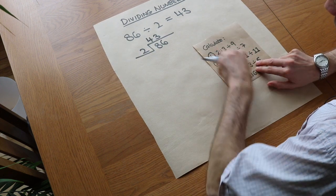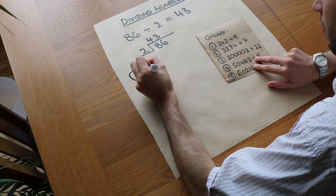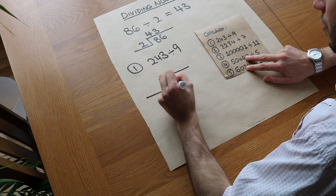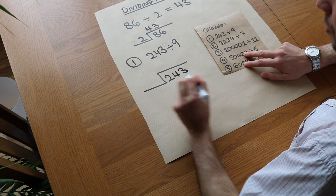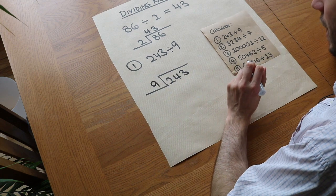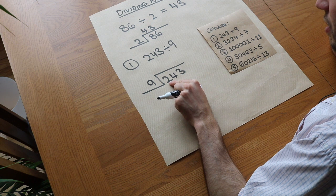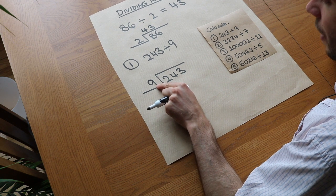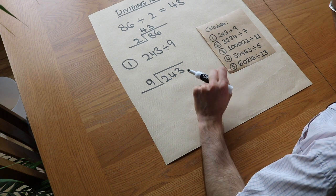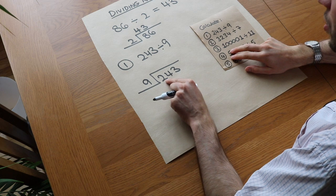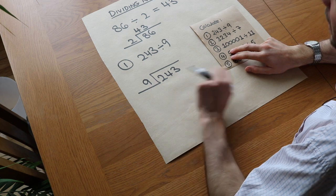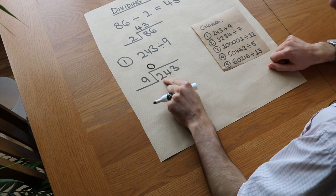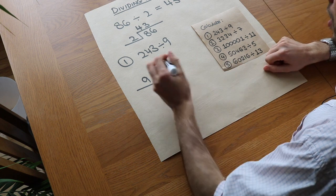We can use this method for harder examples. If we're doing 243 divided by 9, we put 243 on the right and the 9 on the left. Then we say: how many times does 9 go into 2? Well, it doesn't go in any times — 9 times 1 already gets you up to 9, which is too big. Think of it as having 2 sweets shared between 9 people — no one gets any sweets. So it goes 0 times, but we still have the 2 sweets left, giving us a remainder of 2.